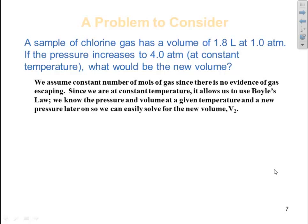We assume constant number of moles of gas since there is no evidence of gas escaping. Since we are at constant temperature, it allows us to use Boyle's Law. We know the pressure and volume at a given temperature and a new pressure later on, so we can easily solve for the new volume V2.